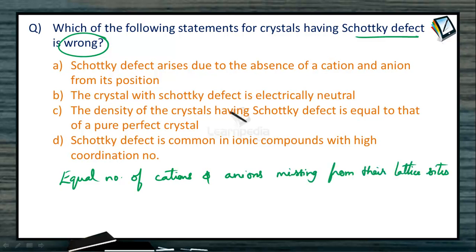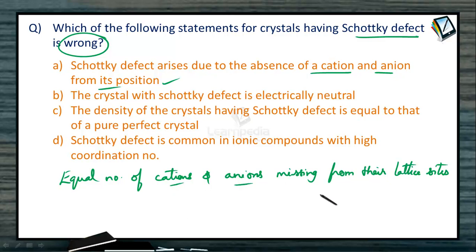That is the reason why the statement given in option A is correct: Schottky defect arises due to the absence of a cation and anion from its position. And as equal number of cations and anions are missing, the electrical neutrality of the crystal is not disturbed. That ionic compound is still neutral only, so the second statement is also correct.